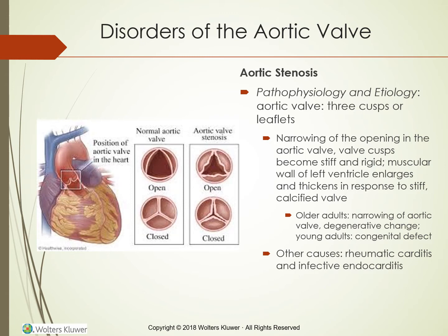Aortic stenosis means narrowing of the opening in the aortic valve when the valve cusp becomes stiff and rigid. It is a common valvular disorder in the U.S., especially among older adults. In older adults without predisposing cardiac conditions, narrowing is age-related from progressive calcium deposits. In young adults, aortic stenosis is usually a later consequence of a congenital defect in which the valve has two instead of three cusps. Symptoms appear after several decades when calcification causes the valves to harden. In others, aortic stenosis results from valve damage related to rheumatic carditis and infective endocarditis.